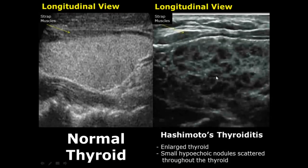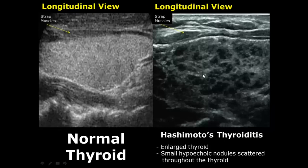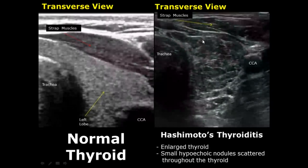Now we move on to parenchymal diseases of the thyroid, starting off with Hashimoto's thyroiditis. It can cause hypothyroidism in the patient. There is enlargement of the thyroid and hypoechoic nodules scattered throughout the parenchyma. In this image you can also see hypoechoic nodules scattered throughout the thyroid. Proper diagnosis is made clinically and serologically, along with ultrasound appearances.